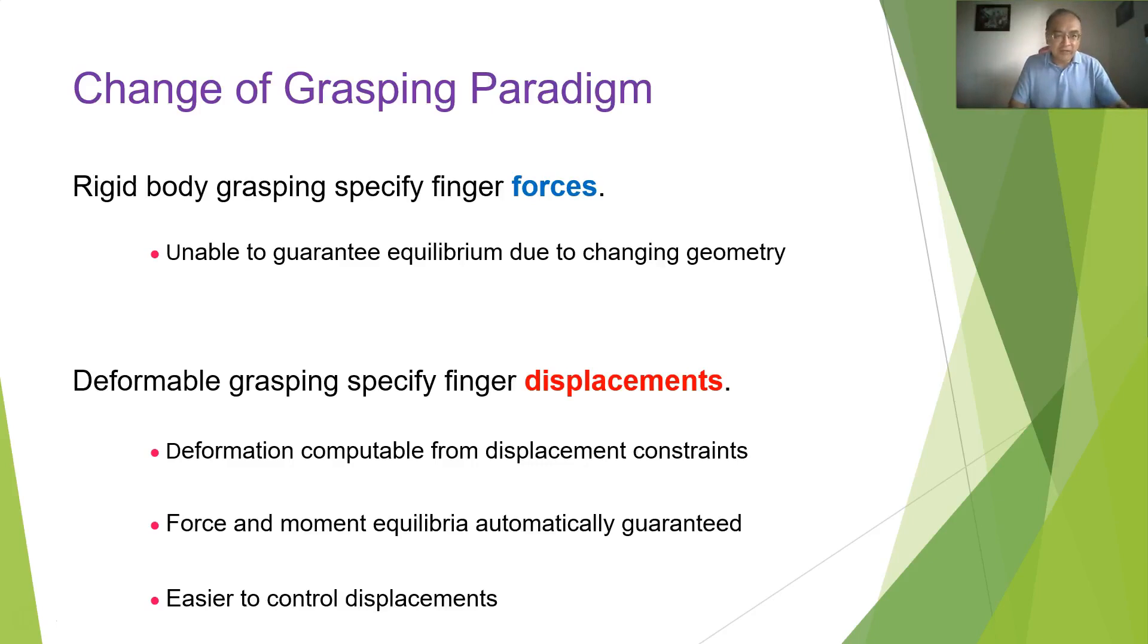So for deformable grasping, there's a paradigm change. Now we moved from forces to displacements. This has a few benefits. First of all, deformation is computable from these displacement constraints imposed by the fingers grasping the object. Secondly, force and moment equilibrium are automatically guaranteed. So the third reason is it's easier to control the displacements.